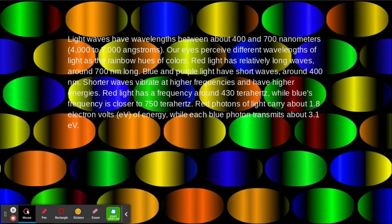Light waves have wavelengths between about 400 and 700 nanometers. Our eyes perceive different wavelengths of light as the rainbow hues of colors. Red light has long waves around 700 nanometers. Blue and purple light have short waves around 400 nanometers.